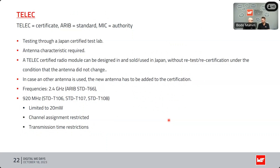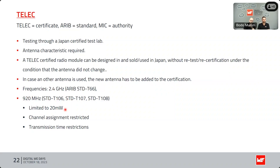TELEC is the certification for Japan. We have some radio modules certified for Japan. TELEC refers to the certificate, ARIB is the standard, and MIC is the authority. It must be tested through a Japan-certified test lab. Importantly, the antenna characteristic is a required part of the certification. A TELEC-certified module can be used in Japan without re-testing or re-certification — as long as the antenna does not change. In Japan, 2.4 GHz is used, and for sub-GHz bands, 920 MHz is available but limited to 20 mW.